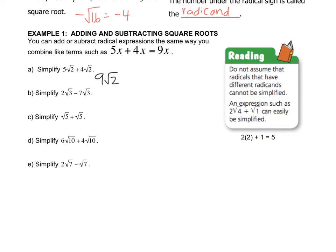2 radical 3 minus 7 radical 3: 2 minus 7 is negative 5, so that's going to be negative 5 radical 3. This is just like x plus x. If it helps, put 1 radical 5 plus 1 radical 5, so that's 2 radical 5.